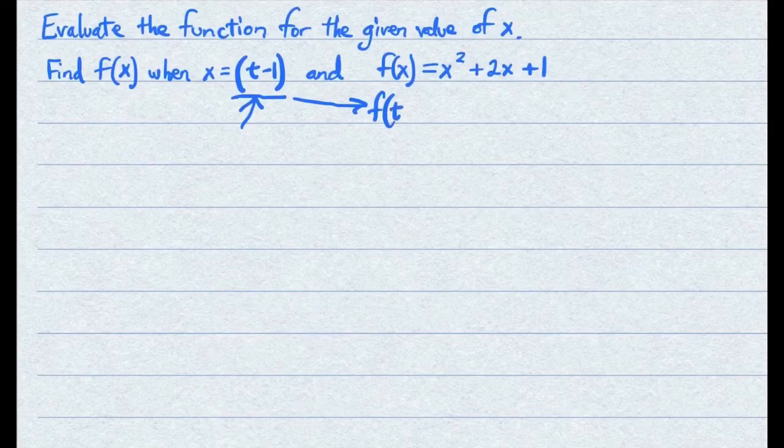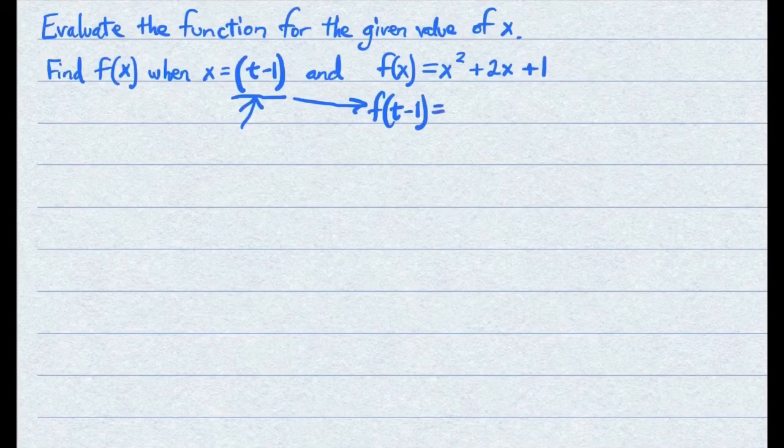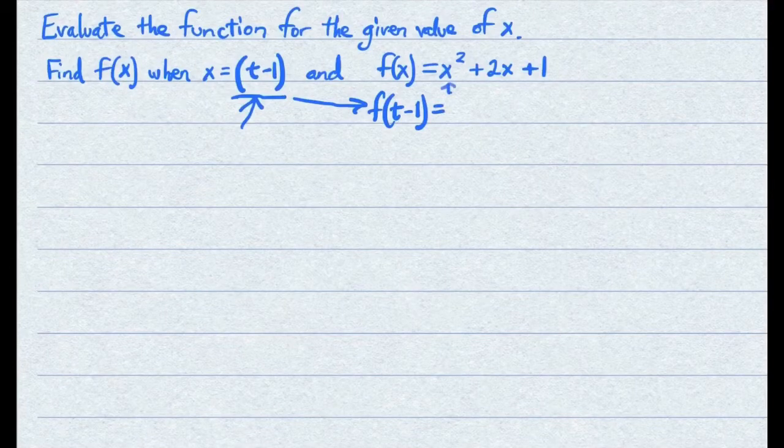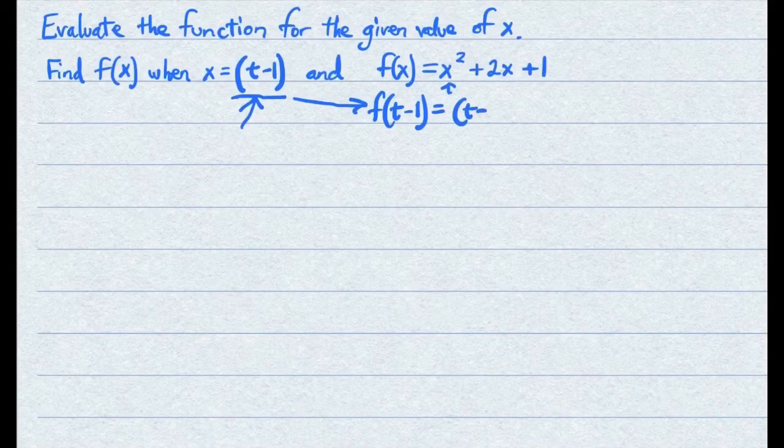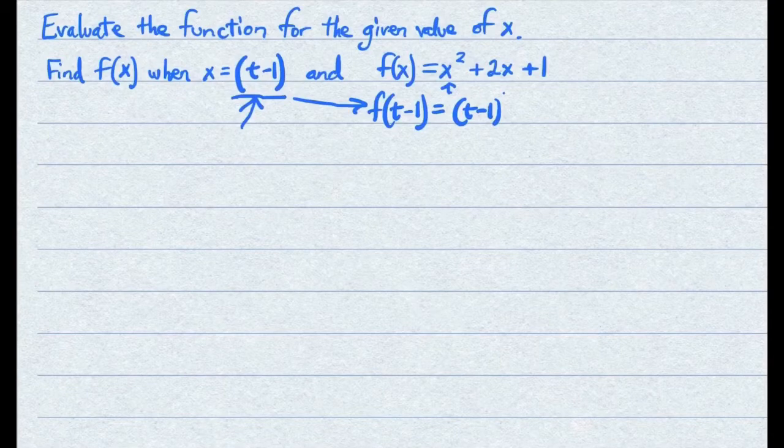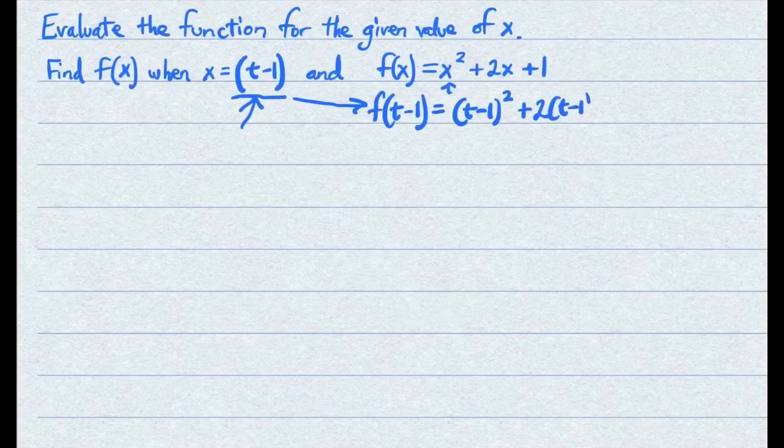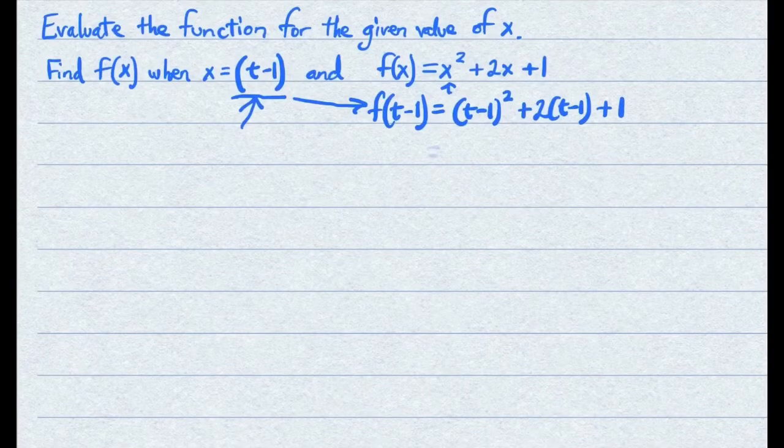So instead of f of x, you have f of t minus 1 equals, parentheses, t minus 1 squared, plus 2, times parentheses, t minus 1, plus 1.